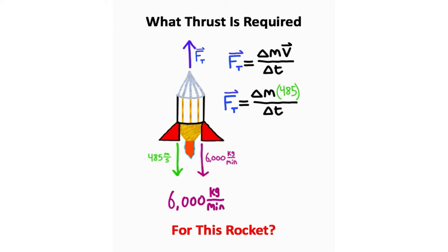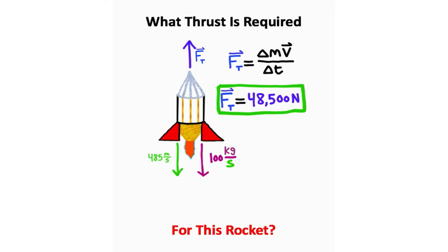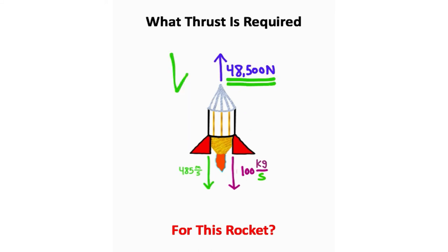So I'll take our 6,000 kilograms per minute, and I know for every one minute, there's 60 seconds. So what I can do is cancel the minutes, and 6,000 divided by 60, that's going to give you 100 kilograms per second. So this is the new rate that we can use, and we can plug this in for our change in mass over change of time rate. And that's going to give you 100 times 485, which is 48,500 newtons. So that right there is the thrust required for this rocket.